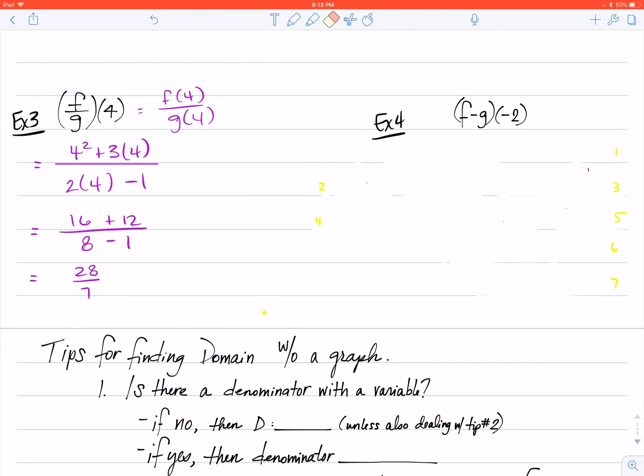That's a division example. A subtraction example: we've got f minus g using the same two functions of negative 2. Let's write that a little bit nicer first, so f of negative 2 minus g of negative 2. Take the negative 2, plug it into our f function, and then take that same negative 2, plug it into our g function.